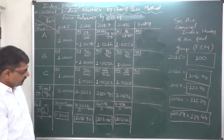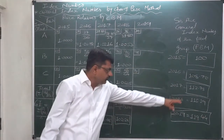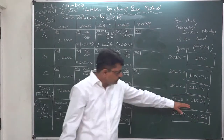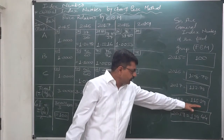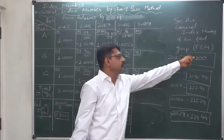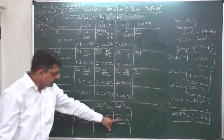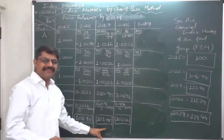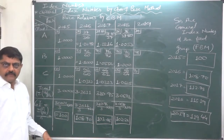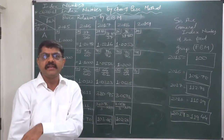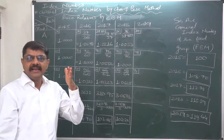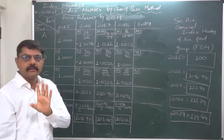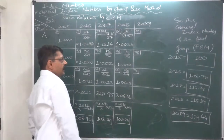In fixed base method it was 115.19, but in chain base method it is 102.26. In fixed base the general average price rise was 15.19% as compared to 2015, but in chain base the average price rise is only 2.26% — as compared to 2017, not 2015. In chain base method we compare the prices of any item or general average only with the previous year. That is the essence of chain base method.